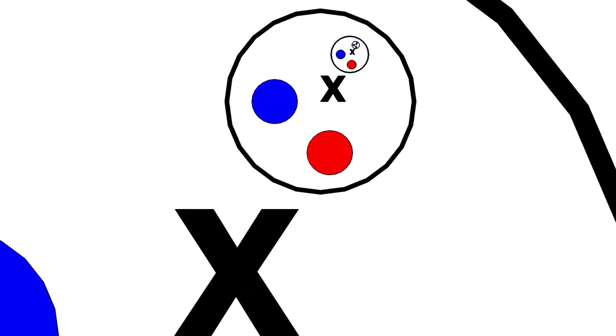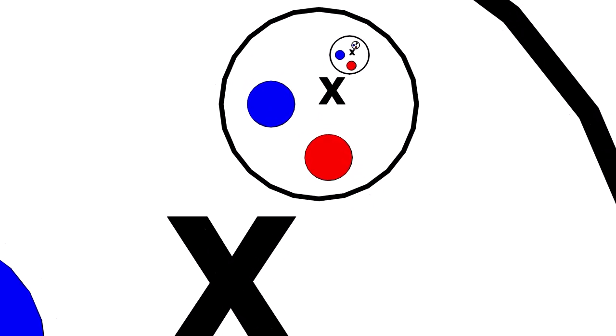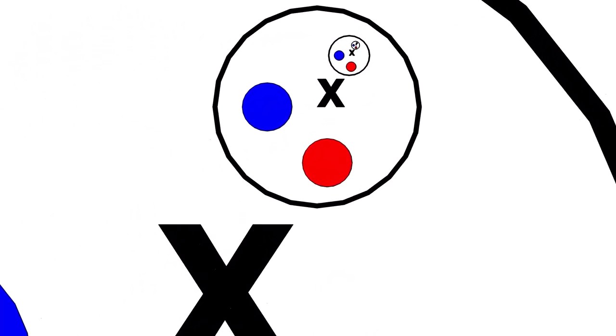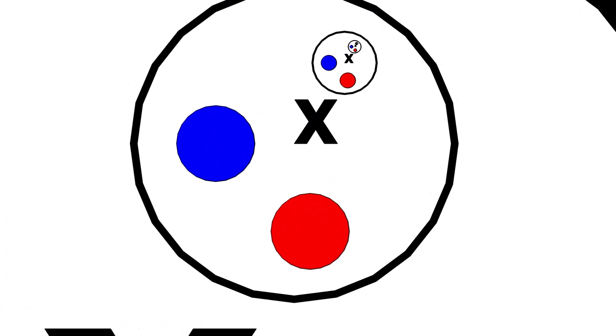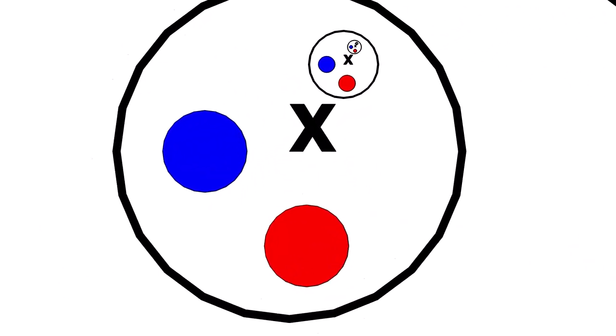A set is a container with some elements. And if we have a set X, then X cannot be one of the elements of X. Imagine a set X that has X inside itself — if I zoom in, I will find X inside X. And if I zoom in again, I will find X inside X inside X. I can keep on going like this forever, so there's no foundation, no base, no starting point. And that's what we don't want.